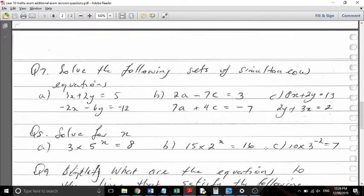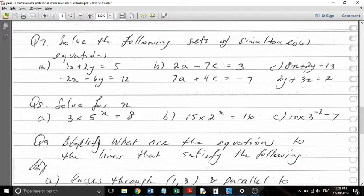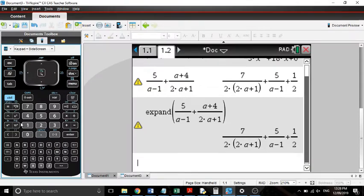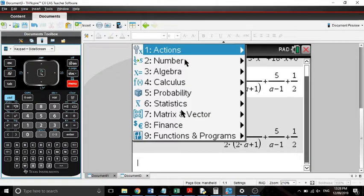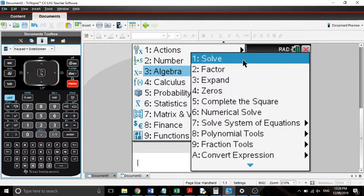We'll have a look at how to solve simultaneous equations as well. So doing it by hand is great. Doing it by CAS is a lot quicker. So we'll look at this thing. We've got 3x plus 2y equals 5. 2x minus 6y equals negative 12. We're going to solve that simultaneously using CAS. So for that one, we go to menu, algebra, and solve.